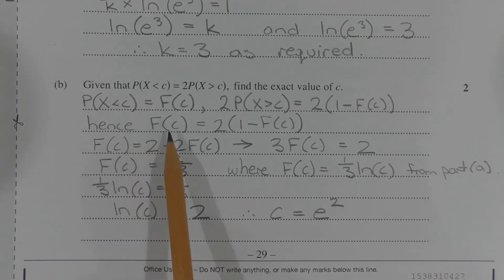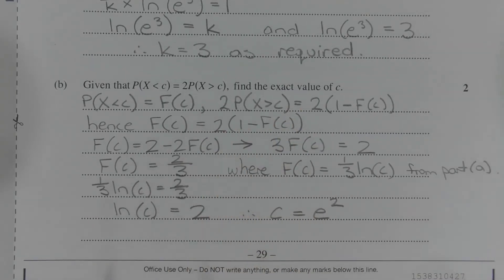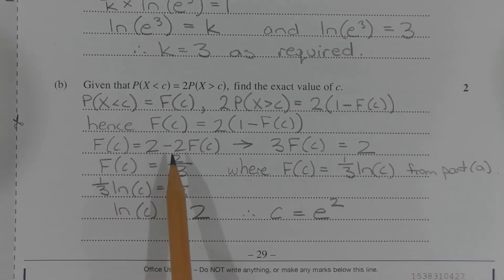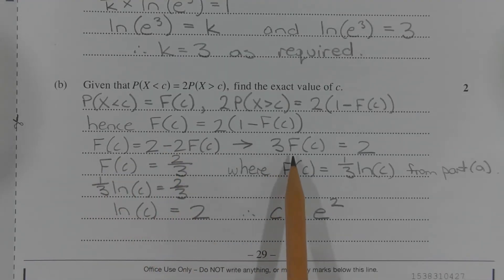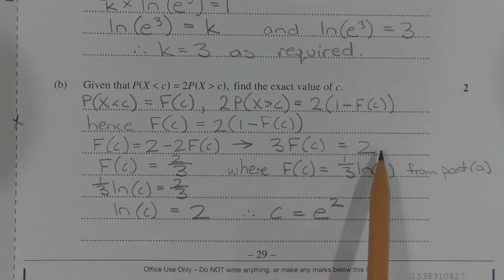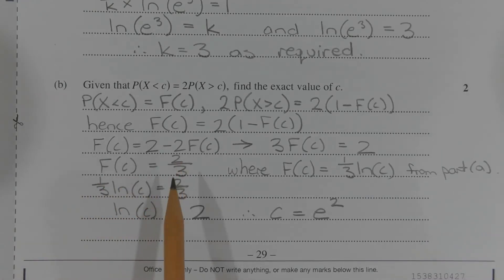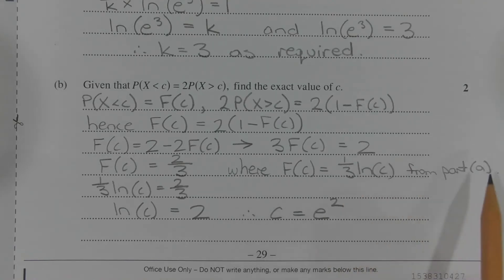Hence, F(C) is equal to 2 times 1 minus F(C). Expanding the brackets on the right hand side, we get F(C) equals 2 minus 2 times F(C). Adding 2 times F(C) to both sides, we get 3 times F(C) equals 2. Dividing both sides by 3, we get F(C) equals 2 over 3, where F(C) equals one over 3 times ln of C from Part A.